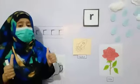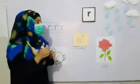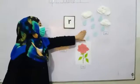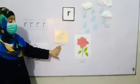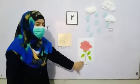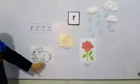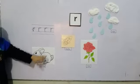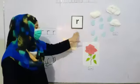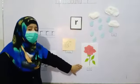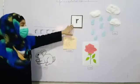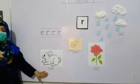Which sound is this? Which sound is this? R is for rain. R is for rocket. R is for rose. R is for rabbit. R is for rain. R is for rose. R is for rocket. R is for rabbit.